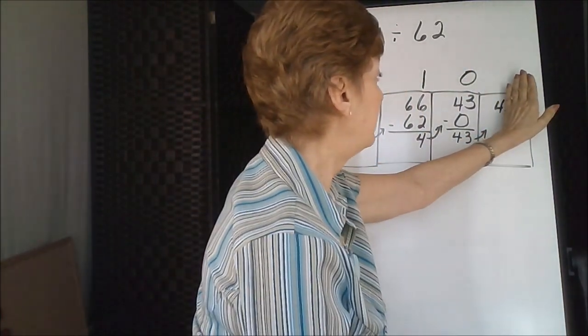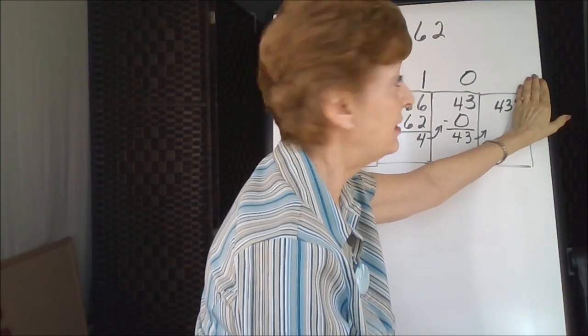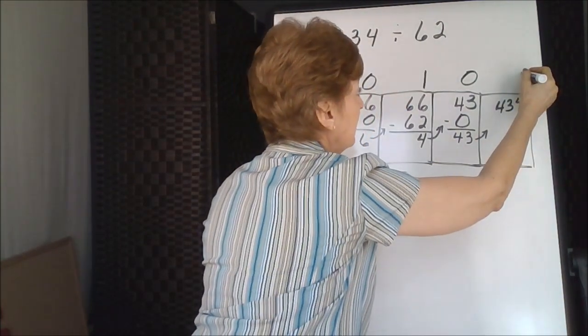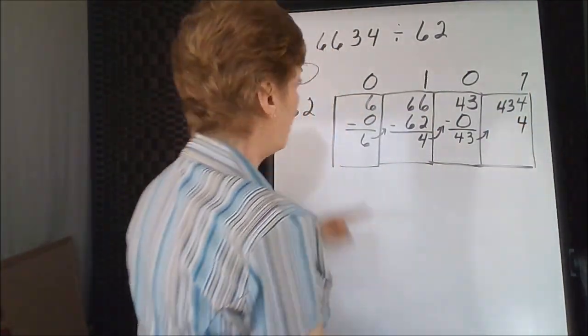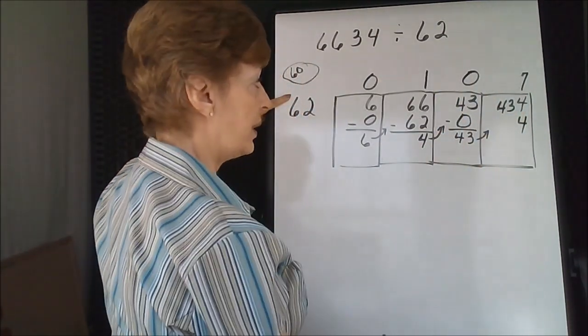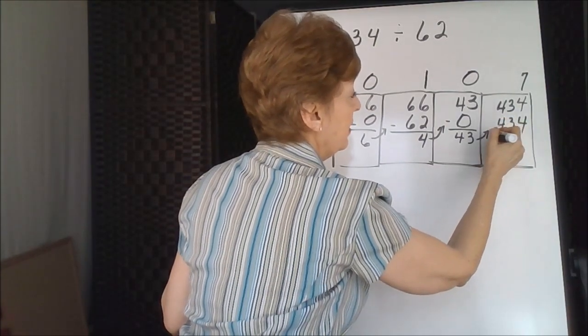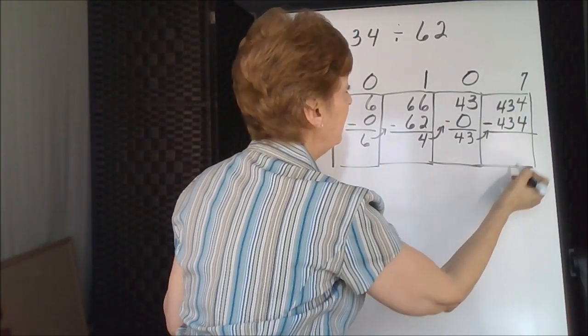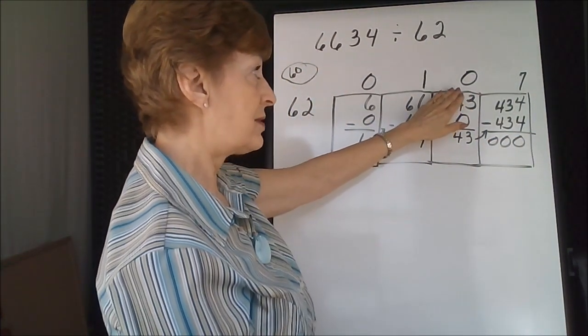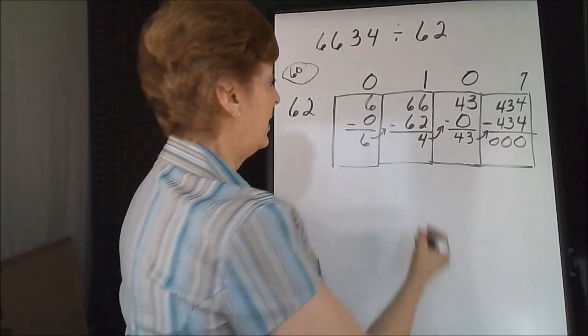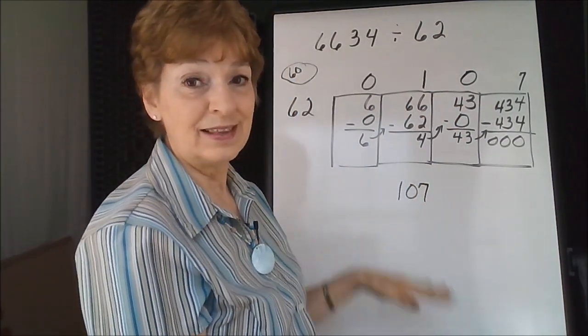6 divides into 4, it does not, into 43, yes, 7 times. 7 times 2 is 14. Carry the 1. 7 times 6 is 42, and one more is 43. When the subtraction is done, it's all 0s. So our answer is actually sitting right in front of us, 107. With no remainder, the problem came out evenly.